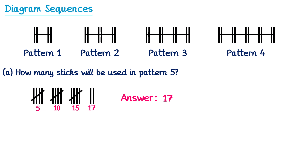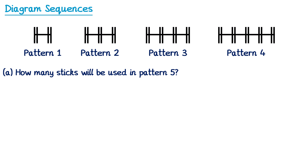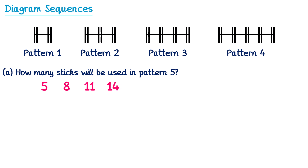Now we could have answered this one without drawing out pattern number 5. Instead we could count up how many sticks are in each of the patterns. Pattern 1 has 5, pattern 2 has 8, pattern 3 has 11 and pattern 4 has 14. These numbers form a linear sequence where to get from one term to the next we add 3. This makes sense because when we drew the patterns, to get the next pattern we drew 3 more sticks. So to get the number of sticks in pattern 5 we add 3 to 14 to get 17.